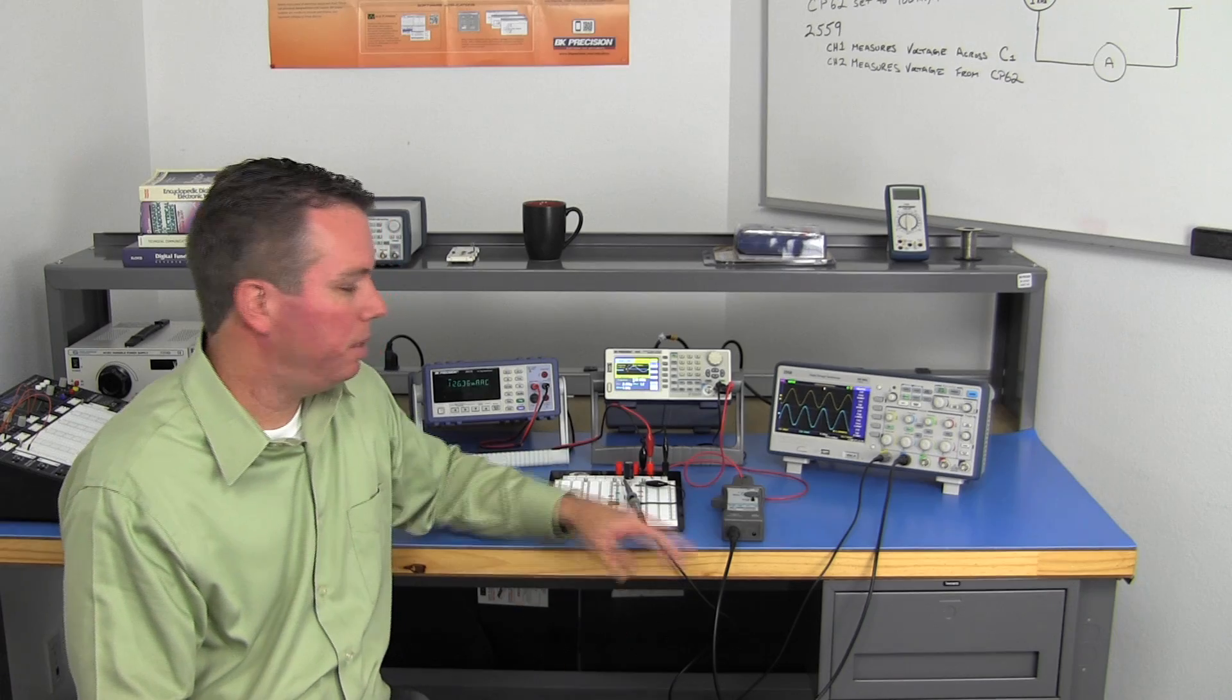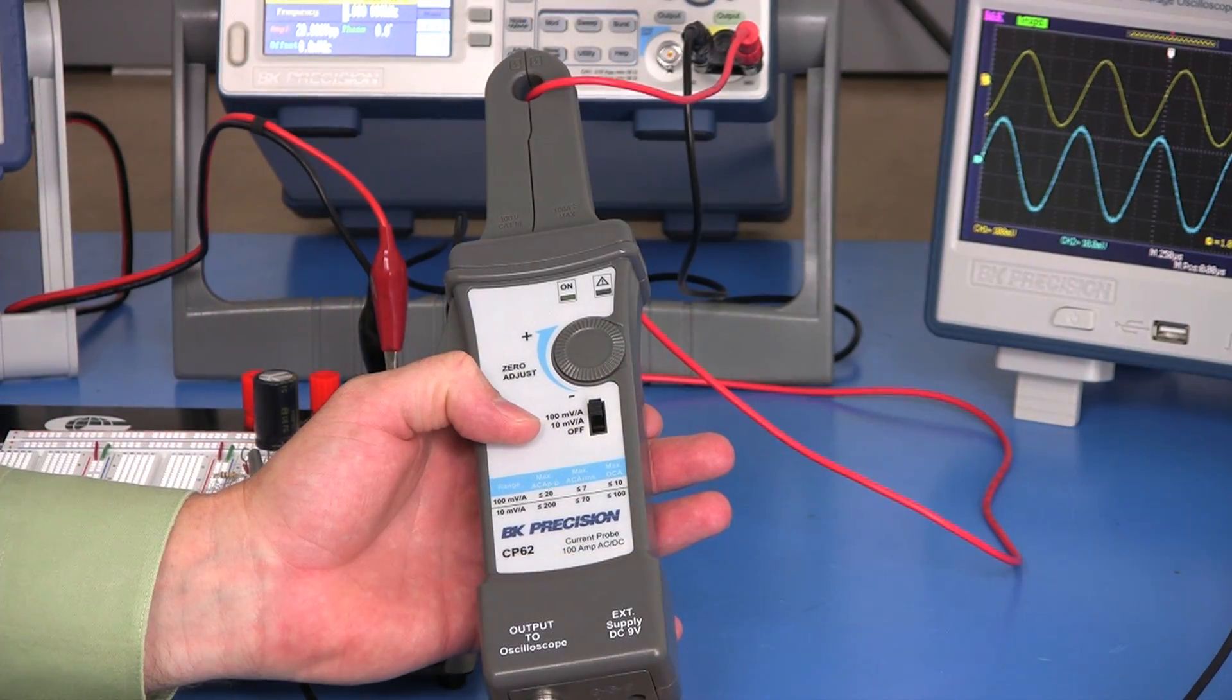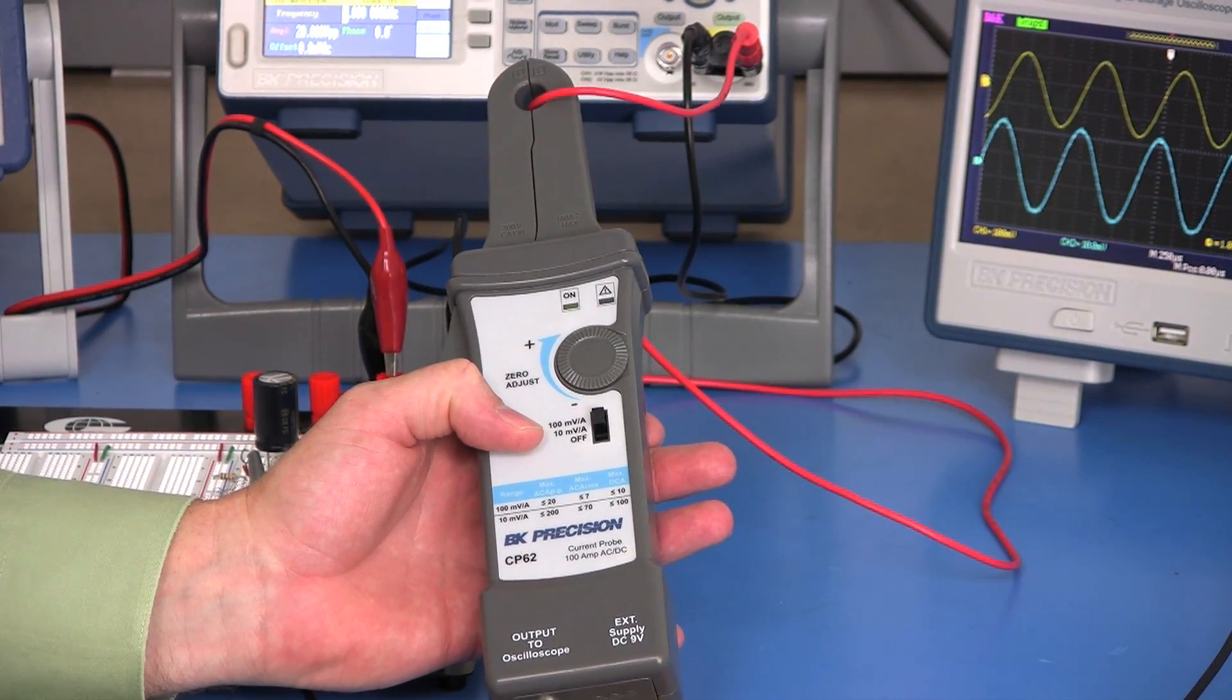In this video, I'm going to show how you can use the CP62 current probe to simultaneously measure both voltage and current of a circuit.